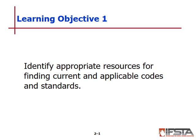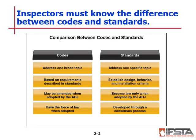Codes and Standards — Pages 41–51, Objective 1: Identify appropriate resources for finding current and applicable codes and standards. Inspectors must know the difference between the terms. Codes are a collection of rules and regulations enacted by a legislative body to become law in a particular jurisdiction. Codes may also be based on a standard or incorporate an entire standard.